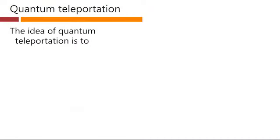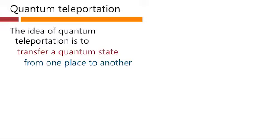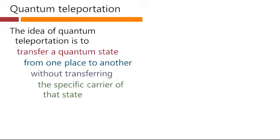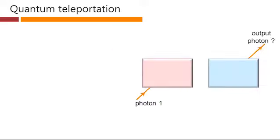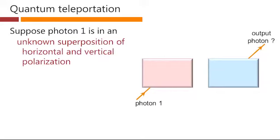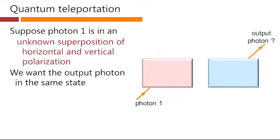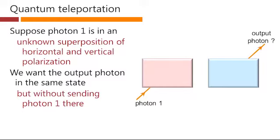The idea of quantum teleportation is to transfer a quantum state from one place to another without actually transferring the specific carrier of that state. So for example, we might have photon 1 that's in an unknown superposition of horizontal and vertical polarization. We want the output photon to be in the same state, but without sending photon one there.